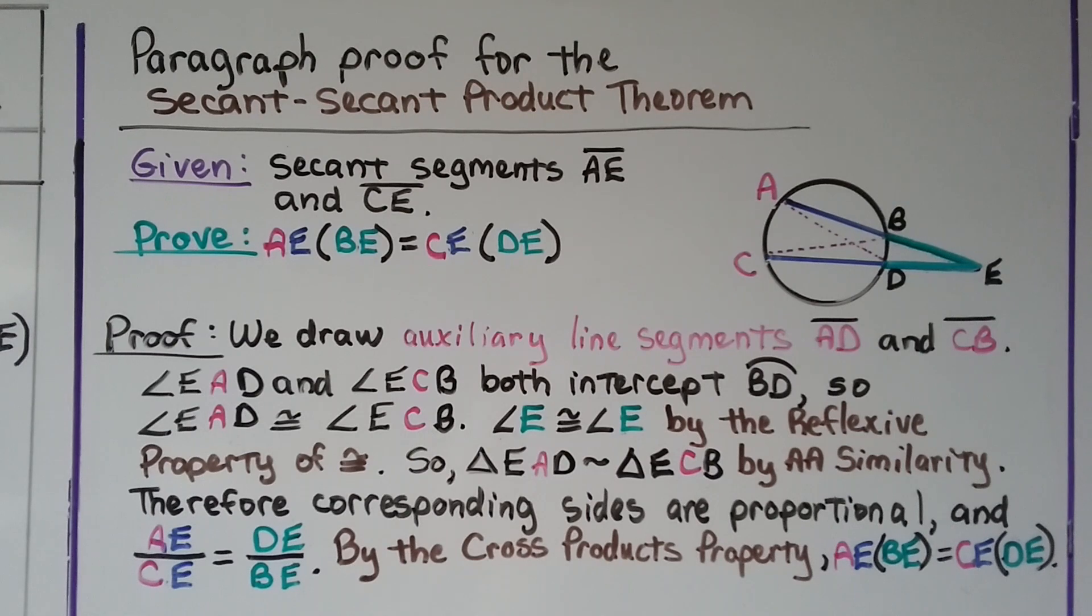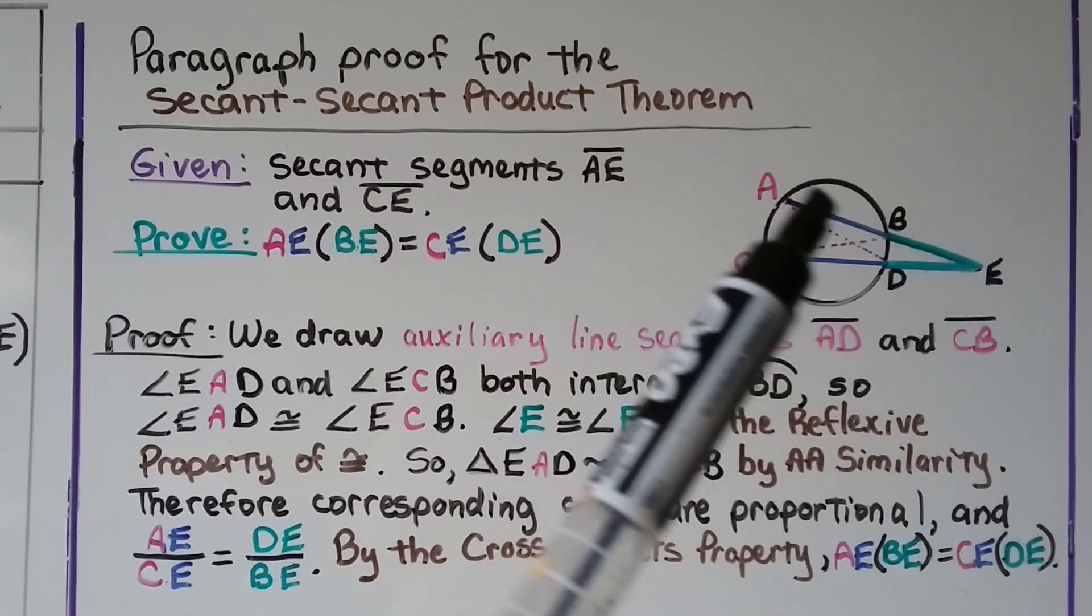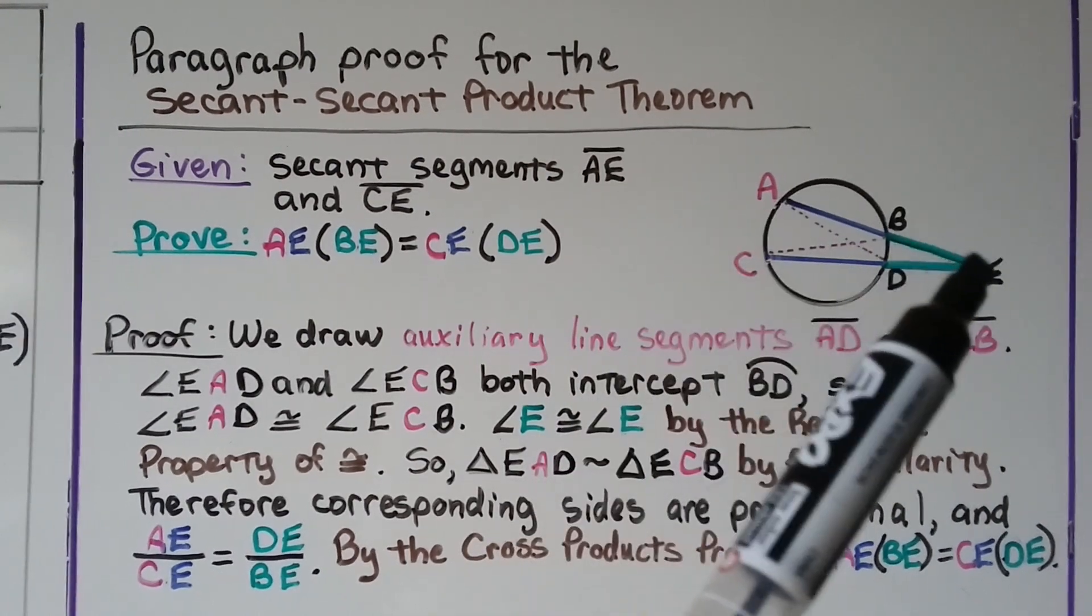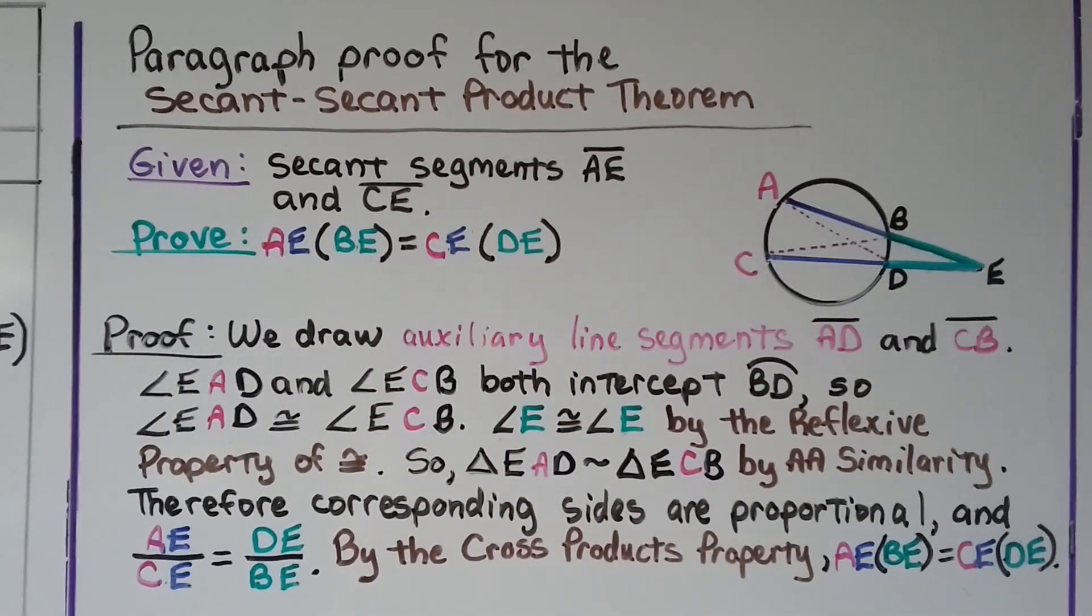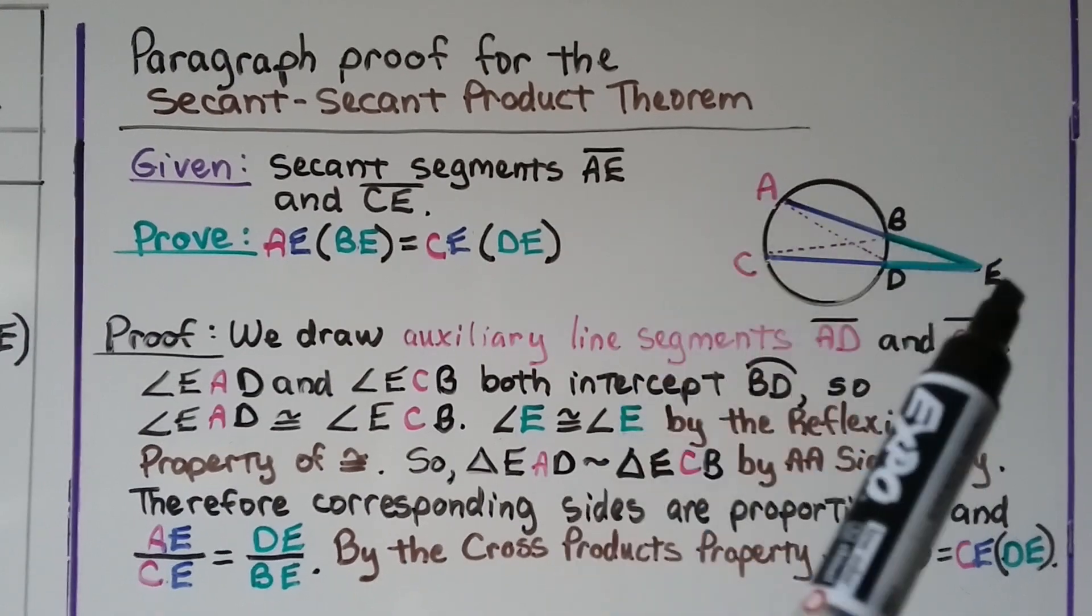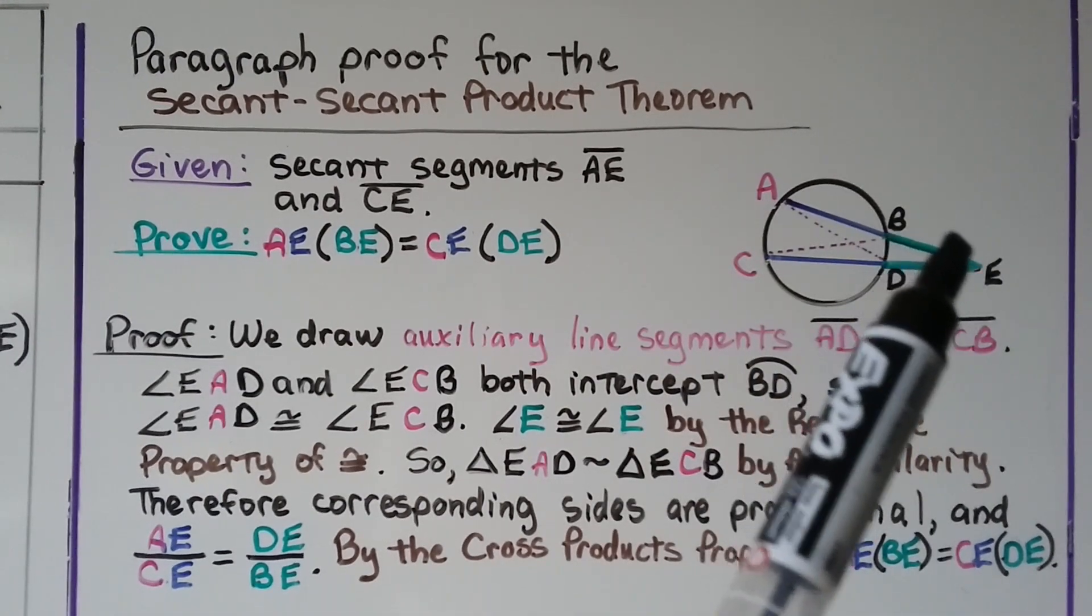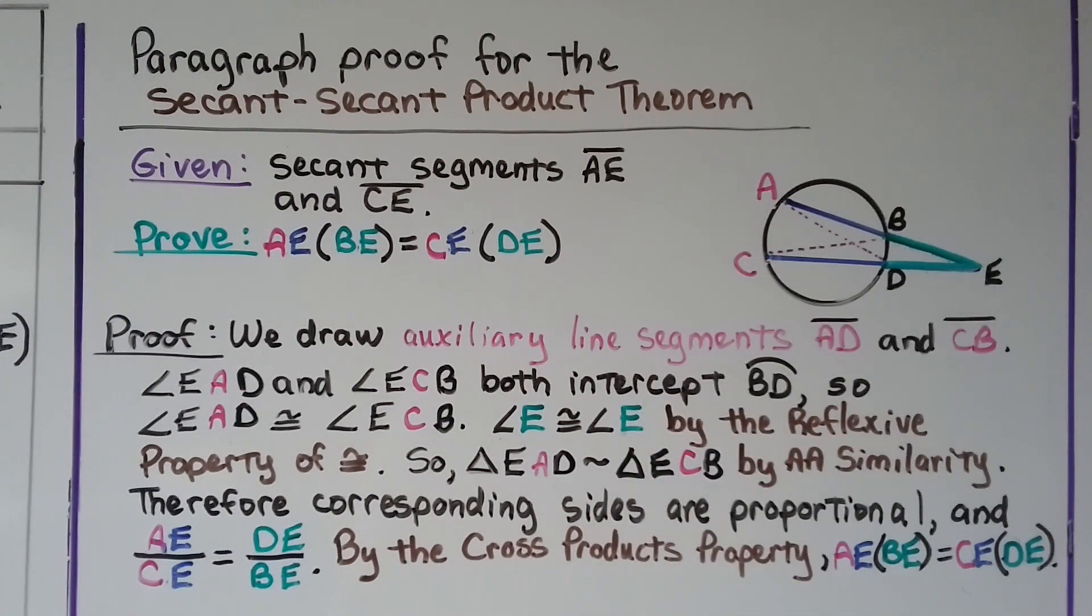We have a paragraph proof for the secant-secant product theorem. Take a look at this drawing. We've got secant segments AE and CE. Those are given. Then we need to prove that AE, the whole thing, multiplied by BE, its external segment, is equal to CE, this whole thing, multiplied by its external segment DE.